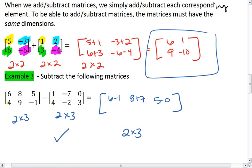Now on the second row, we get 4 minus 4. We get 9 minus a negative 2, which is the same as 9 plus 2. And then negative 1 minus 3.